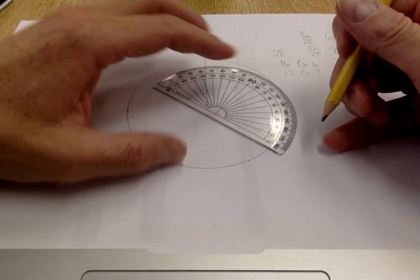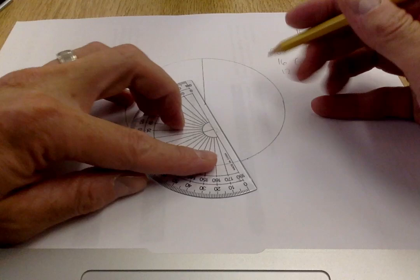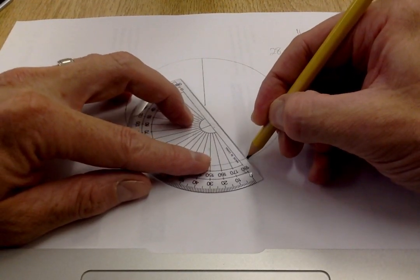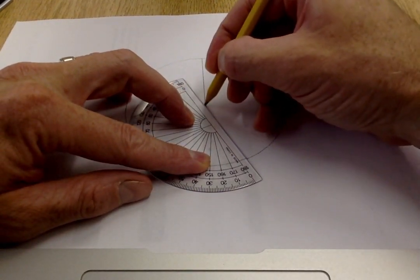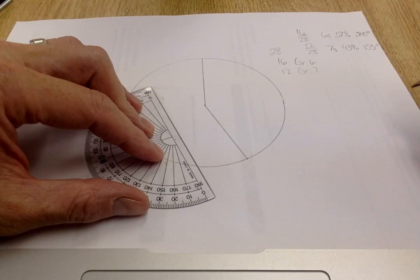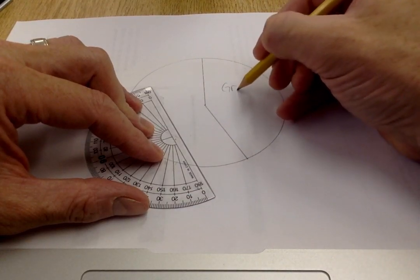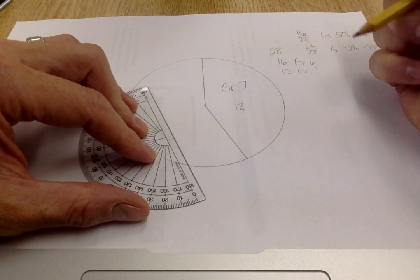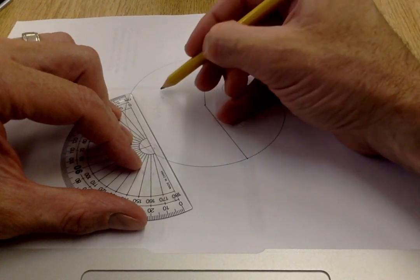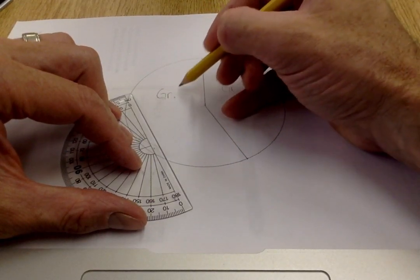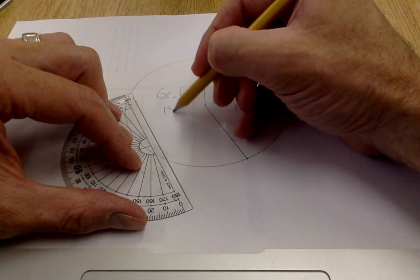I put a little dot there and I connect those dots. So this section here is grade 7, I have 12, which leaves me with this grade 6, which is 16.